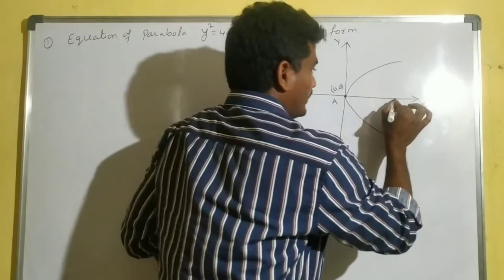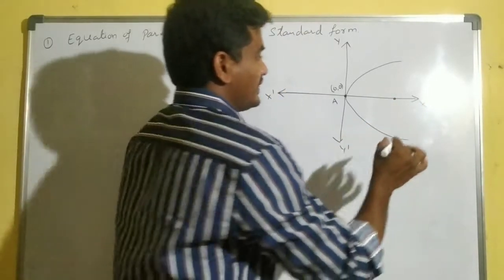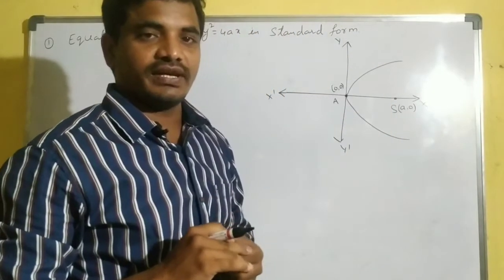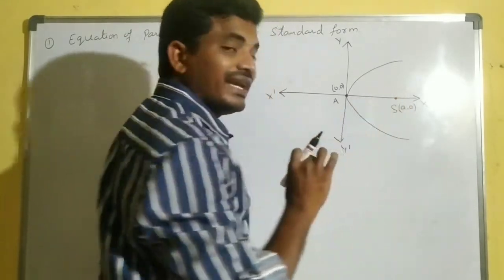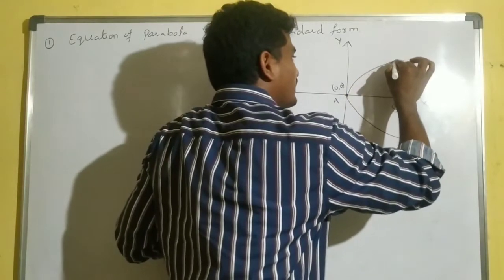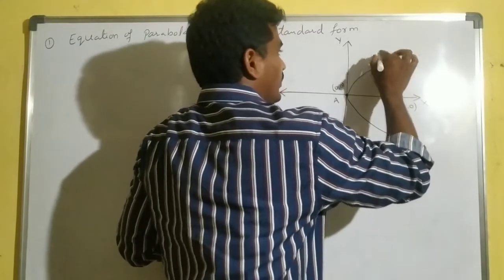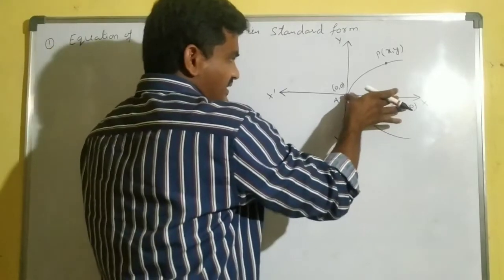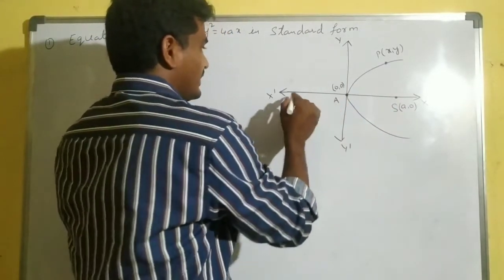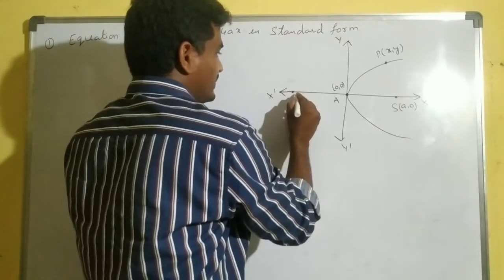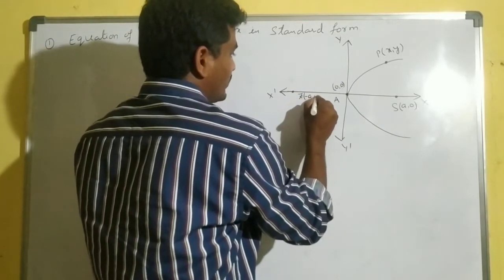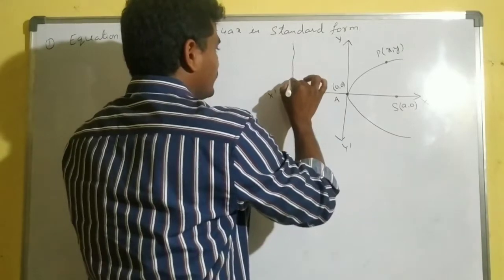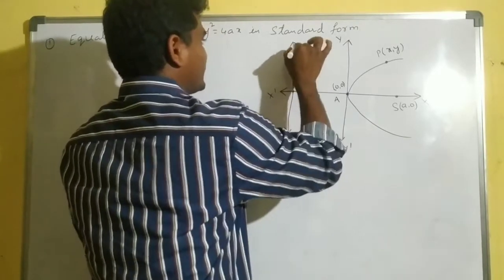I am taking one point as the focus. This point is the focus pointer, I am taking it as S — that is (a, 0). So from A to S, the distance is a units. Another point on the parabola is P(x, y). On the left side, I take point Z at (-a, 0). From this point I am drawing a line — this line is the directrix.